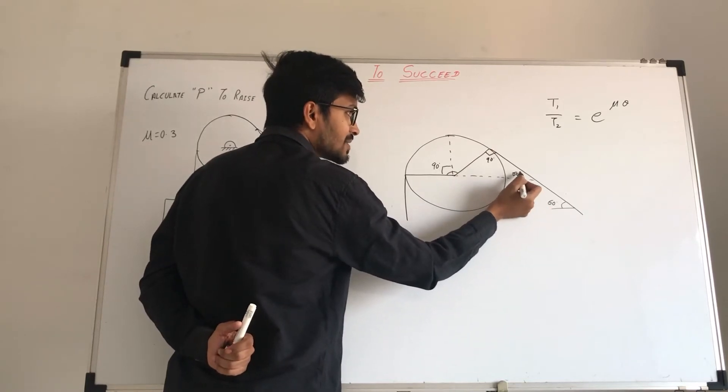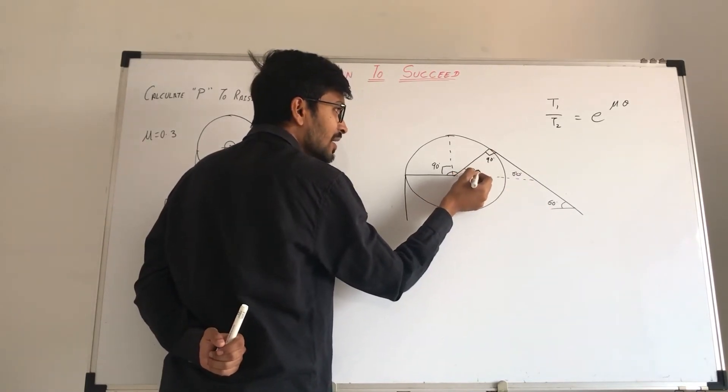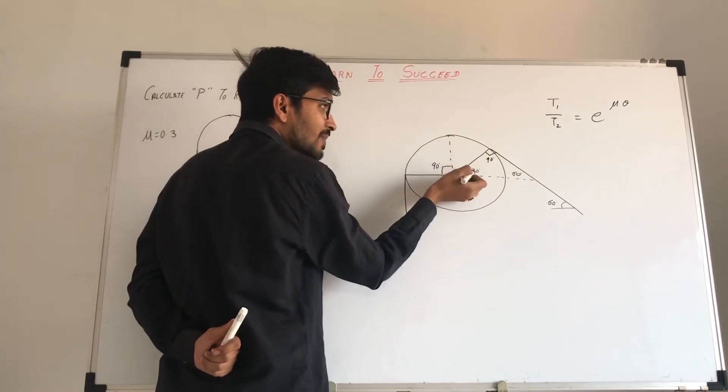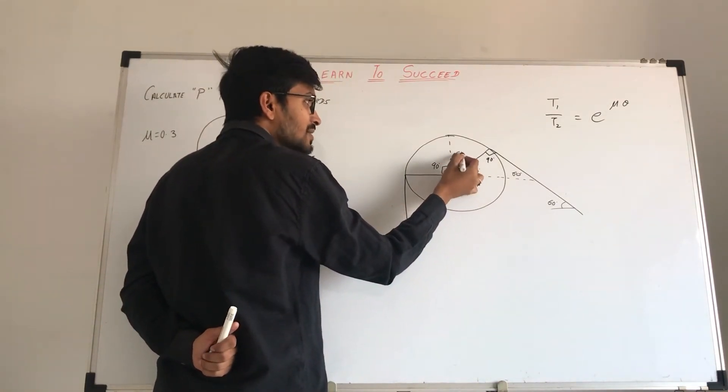And while this angle is 60, it means this angle is 60. So remaining, how much angle here? This is 30. Now this is 30, so this whole angle is 90. 90 minus 30, then how much? This angle will be 60.